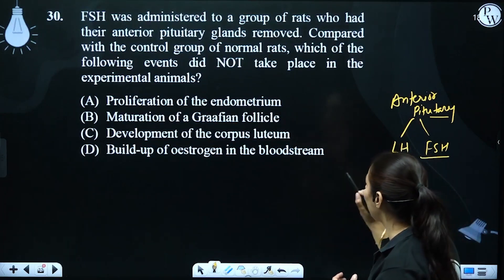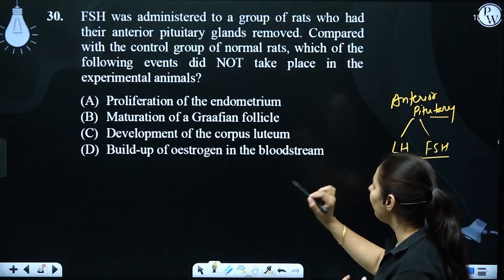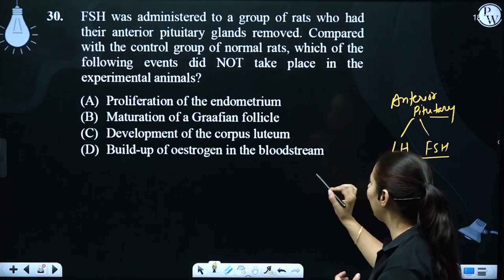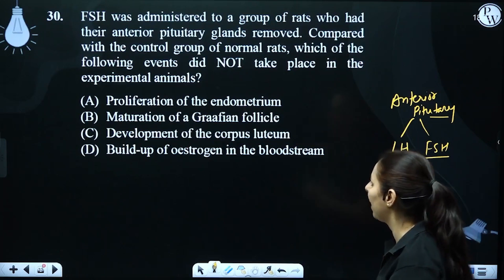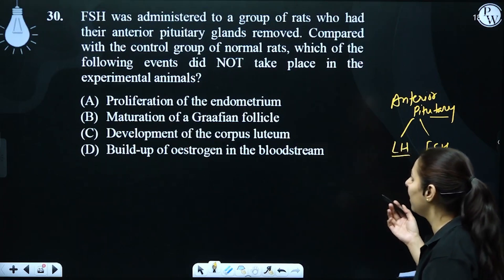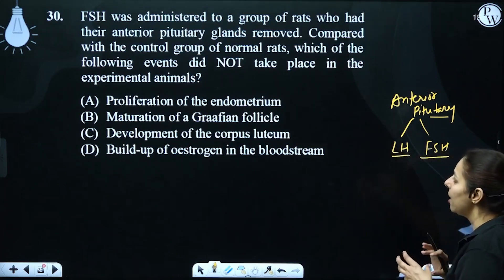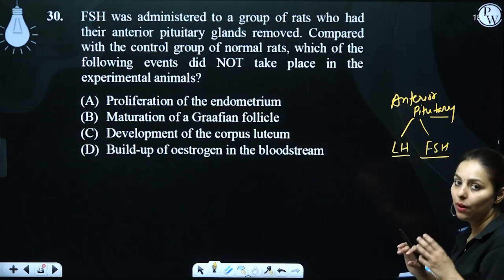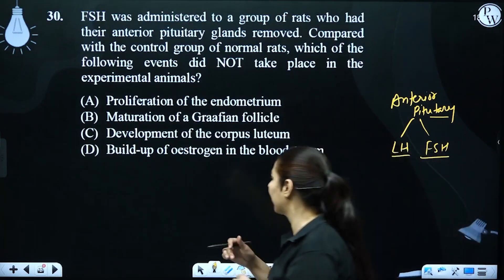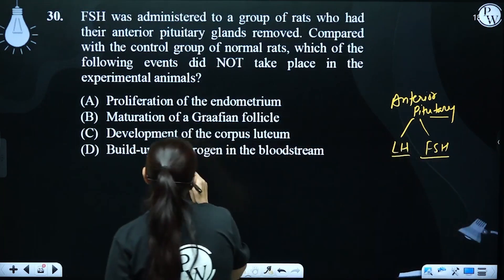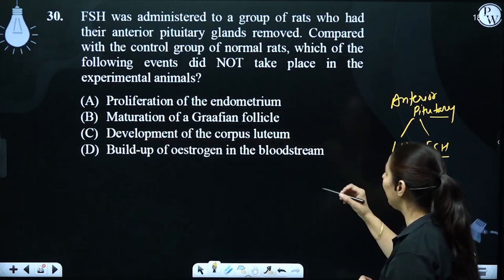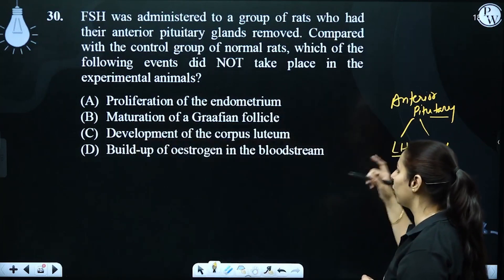Or the maturation of the Graafian follicle? Or the build-up of oestrogen in the bloodstream? FSH would cause follicles to grow, and maturation of the Graafian follicle would also occur. The development of the corpus luteum, however, is a different matter. The build-up of oestrogen in the bloodstream relates to follicle activity in the uterus.